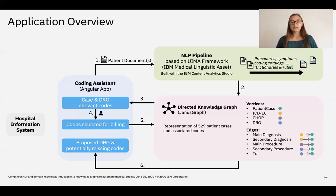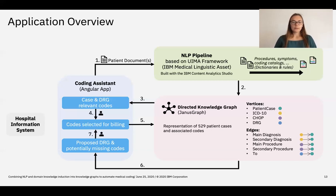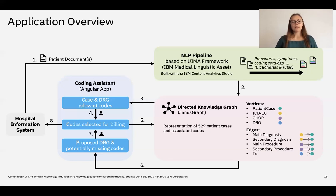Here we get a list of proposed DRG and potentially other relevant missing codes. Missing means either not identified during the pipeline step, or not written down in the document — meaning they might be relevant for billing but were not documented properly, so medical coders can contact the doctor to check if this should be included in the record. A human then selects the relevant codes, and the resulting list for billing can be exported and imported into the hospital information system. In the future, the process should start and end at the hospital information system, with documents taken directly from it and passed through the pipeline.